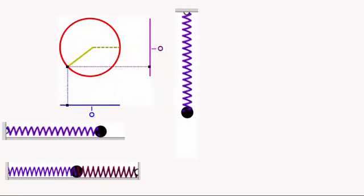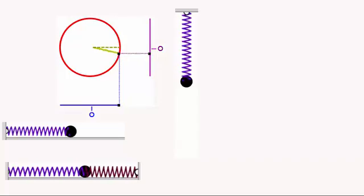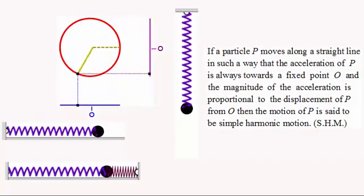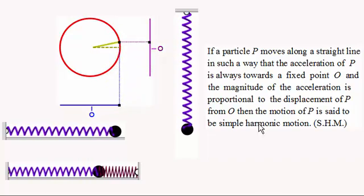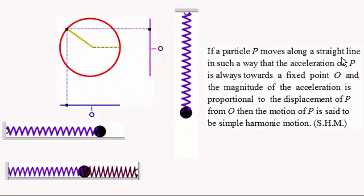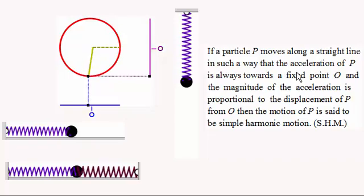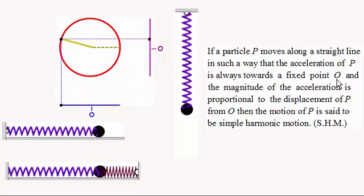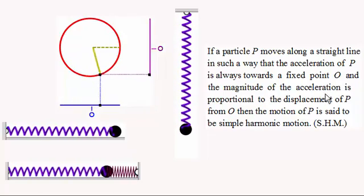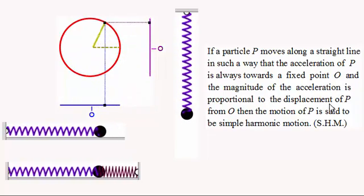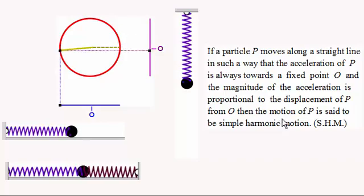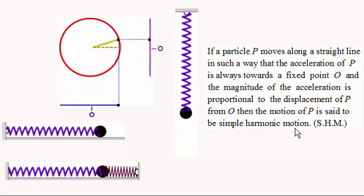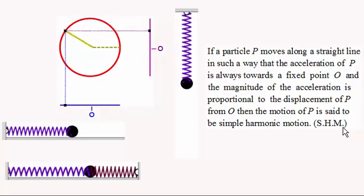Movement like this is called simple harmonic motion. Here is the definition: if a particle P moves along a straight line in such a way that the acceleration of P is always towards a fixed point O, and the magnitude of the acceleration is proportional to the displacement of P from O, then the motion of P is said to be simple harmonic motion, SHM for short.